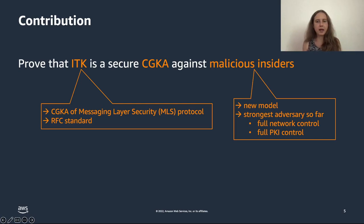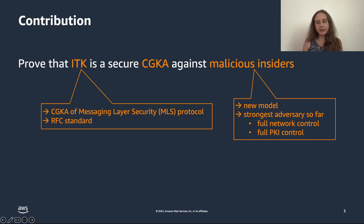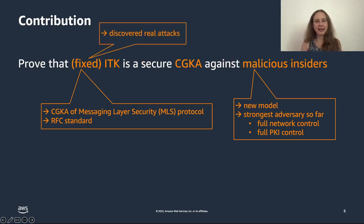Unlike in any other model, the adversary also fully controls the PKI, and we have very fine-grained guarantees depending on how the PKI behaves. For example, one epoch can be secure if good PKI keys are used; another epoch can be insecure because some parties use bad or corrupt PKI keys, which destroy security. We actually discovered real attacks on ITK during our analysis — because of these attacks, we couldn't initially prove it secure. But fortunately they could be easily fixed, and the fixes are now incorporated into the standard. After the fixes, we proved security of ITK.